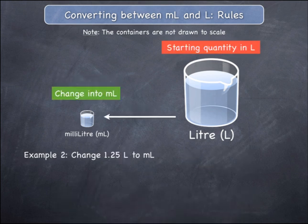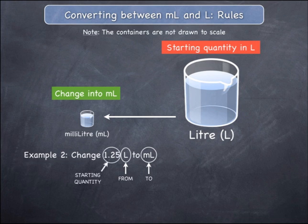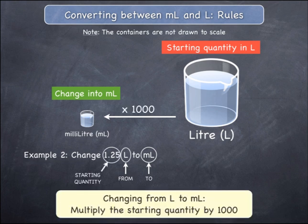Example 2: consider having to change a quantity from litres to milliliters, such as changing 1.25 litres to milliliters. You are starting in litres and want to change to milliliters. The starting quantity is 1.25.